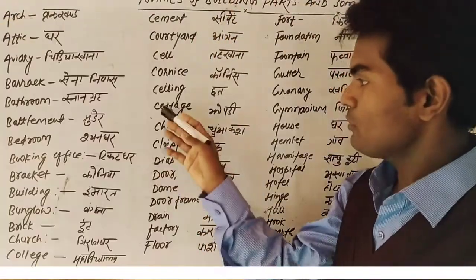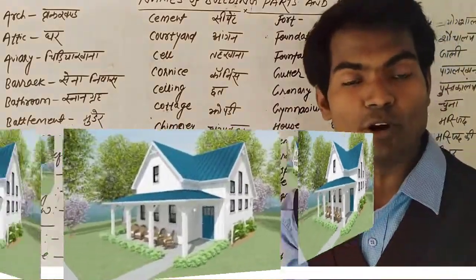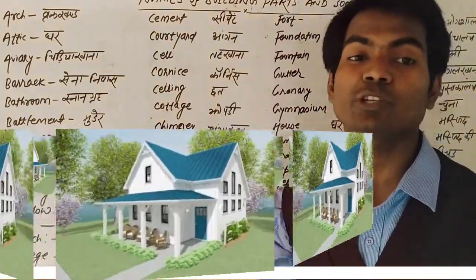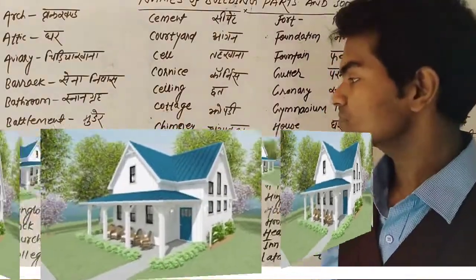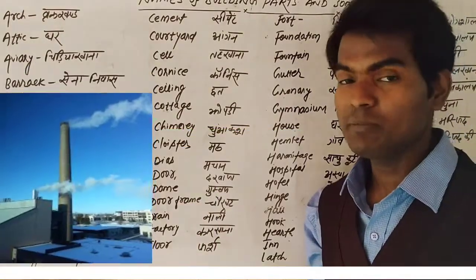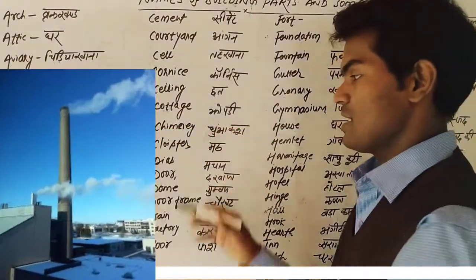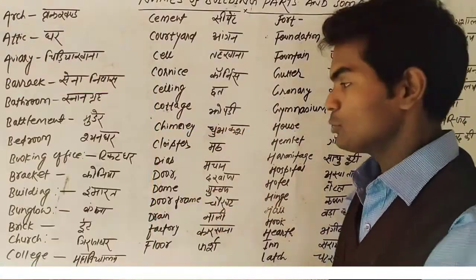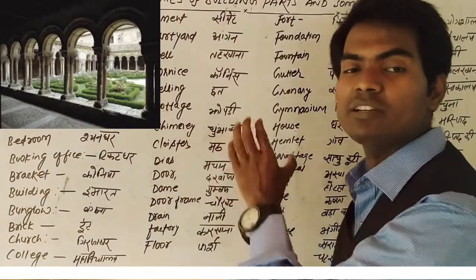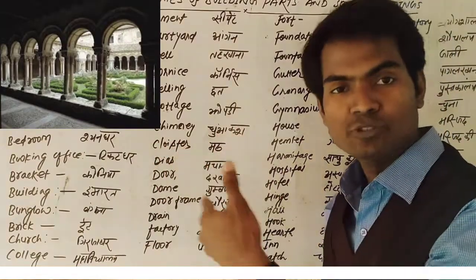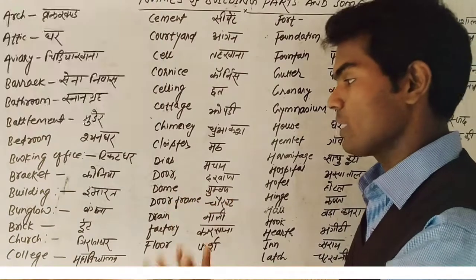Cottage means 'kutia.' Chimney means 'dhuacus' (chimney/smoke outlet). Cloister — cloister ka matlab, it is a place where sadhus and saints live. Dice — dice ka matlab 'machan' hota hai, you can also say stage or manch.